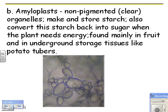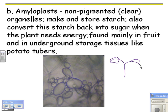Amyloplasts — and we're looking at this because it's part of one of the labs. These are non-pigmented, clear organelles. They make and store starch, and they also convert starch back to sugar when the plant needs energy. They're found mainly in fruit and underground storage tissues like potato tubers. This picture is taken from a potato — the leaves of the potato would have chloroplasts because they need to do photosynthesis.